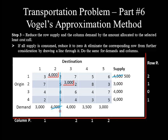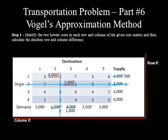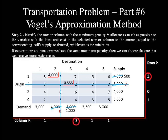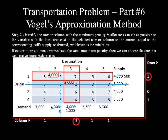Deducting the allocated 3,000 from the corresponding demand and supply reduces the demand from 4,000 to 1,000 and the supply from 3,000 to 0. Row 2 must be crossed out because its origin supply is reduced to 0. Recalculating penalties for the remaining unlined rows and columns: row 1 is 5 minus 3 equals 2; row 3 is 4 minus 4 equals 0; row 4 is 3 minus 2 equals 1. Column 1 is 3 minus 2 equals 1; column 3 is 6 minus 4 equals 2; column 4 is 4 minus 3 equals 1; column 5 is 6 minus 5 equals 1. The maximum penalty is 2, with row 1 and column 3 tied. The least cost in row 1 is 3, with supply of 500 and demand of 3,000, so allocatable amount is 500.